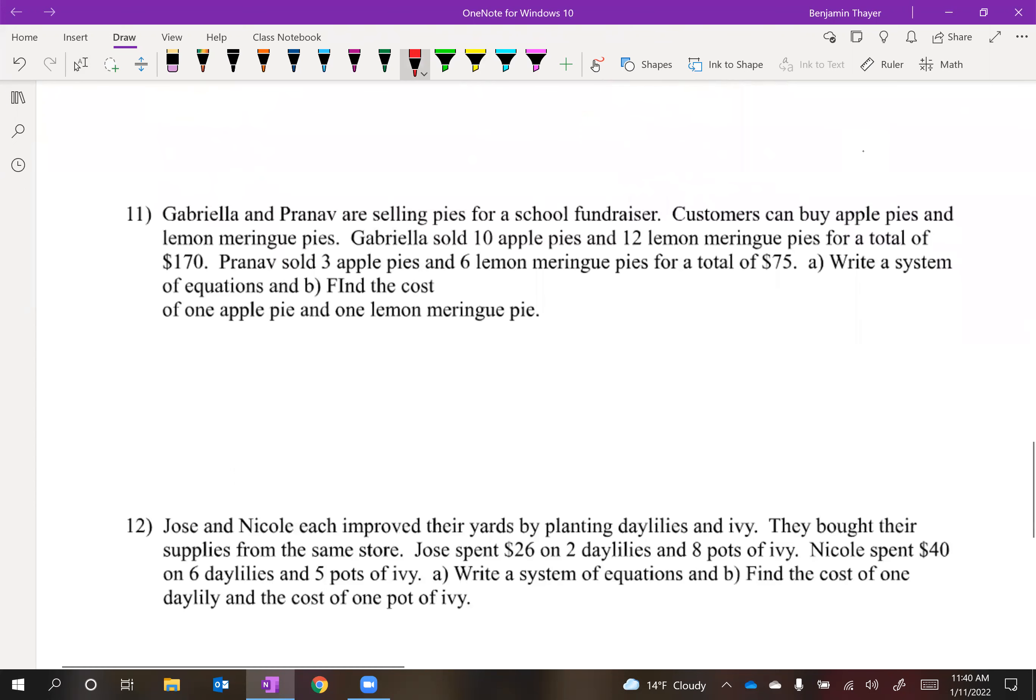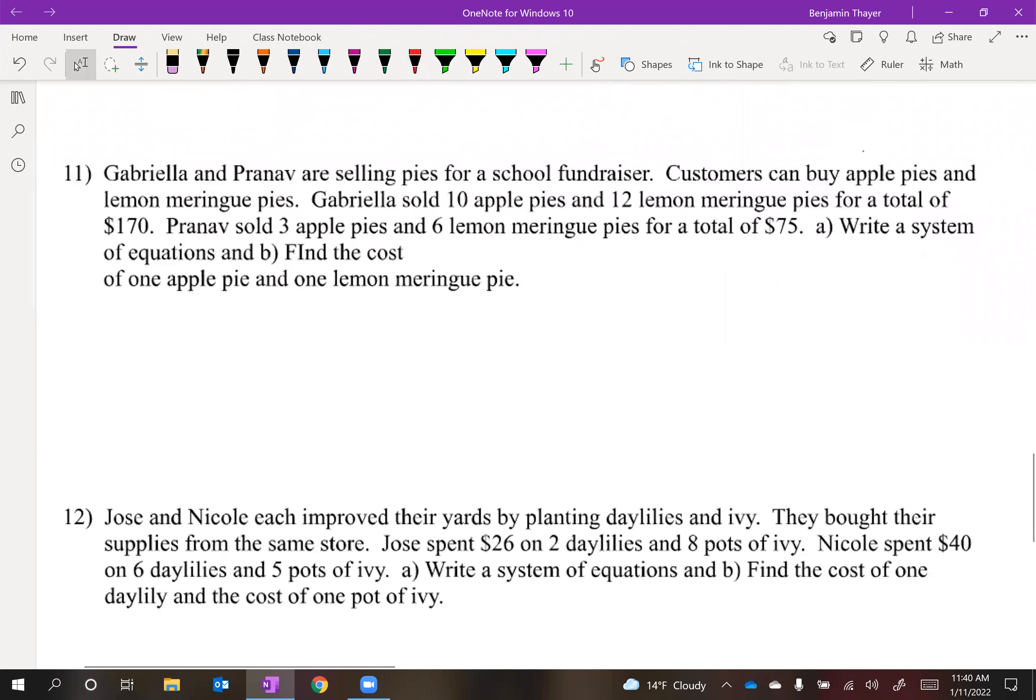Number 11. We've got a fundraiser here. Gabriela and Pranav are selling pies for a school fundraiser. Customers can buy apple pies and lemon meringue pies. So grabbing my highlighter, Gabriela sold 10 apple pies and 12 lemon meringue pies for $170. We don't know how much each of these pies costs. So in just a moment, we're going to write our let statement after we highlight these two sentences.